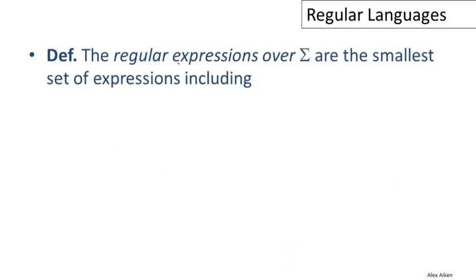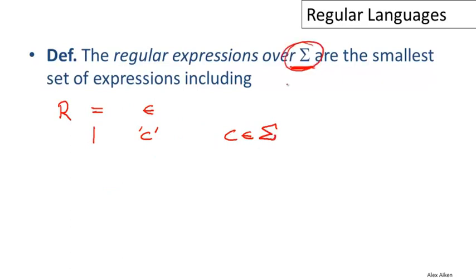To summarize: the regular expressions over some alphabet sigma are the smallest set of expressions including the following. Epsilon is always a regular expression. Or a single character C, where C is an element of our alphabet — so we have one base regular expression for each character in the alphabet. Then we have the compound expressions: the union of two regular expressions, the concatenation of two regular expressions, and the iteration of a regular expression. These five cases are the set of regular expressions over a given alphabet.